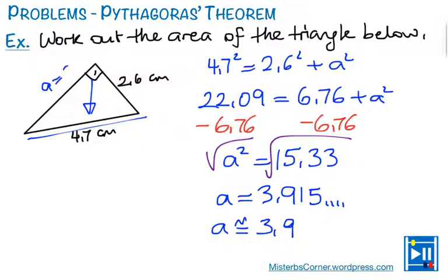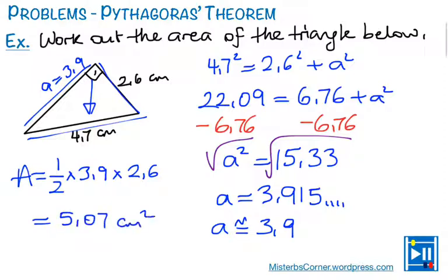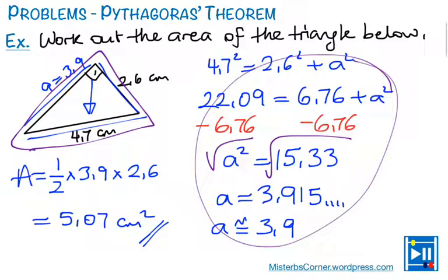So, area will be 1 half of 3.9 times 2.6, which will be 5.07 centimeters squared. So, that's the area. If I was to be asked to find the perimeter, I would just add these after doing Pythagoras. So, these are the problems you can solve by using Pythagoras' theorem to find the missing sides.